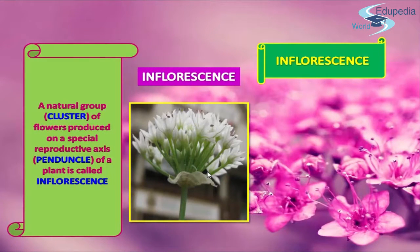A natural group or cluster of flowers produced on a special reproductive axis, that is the peduncle of a plant, is called an inflorescence. This kind of arrangement of flowers on a special reproductive axis, which we call the peduncle, is known as inflorescence.